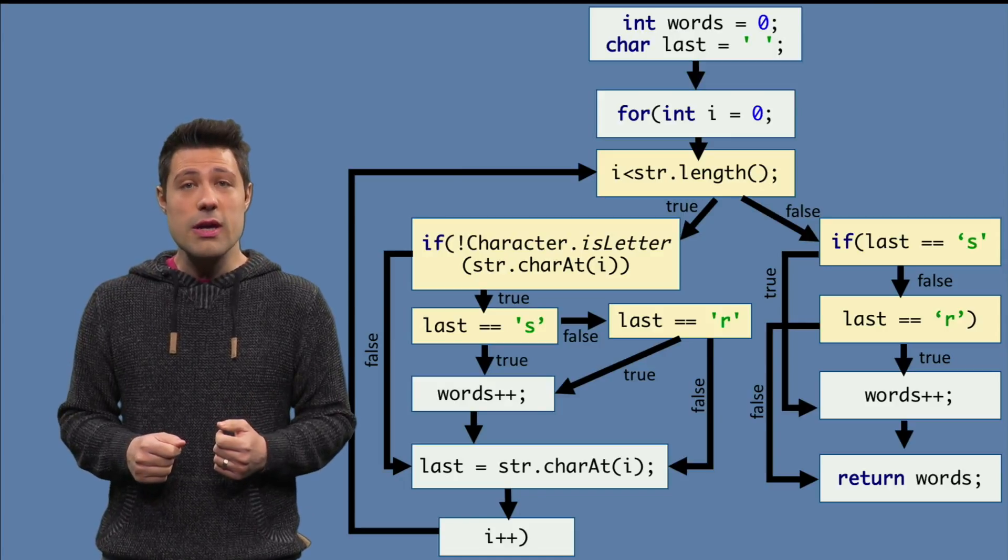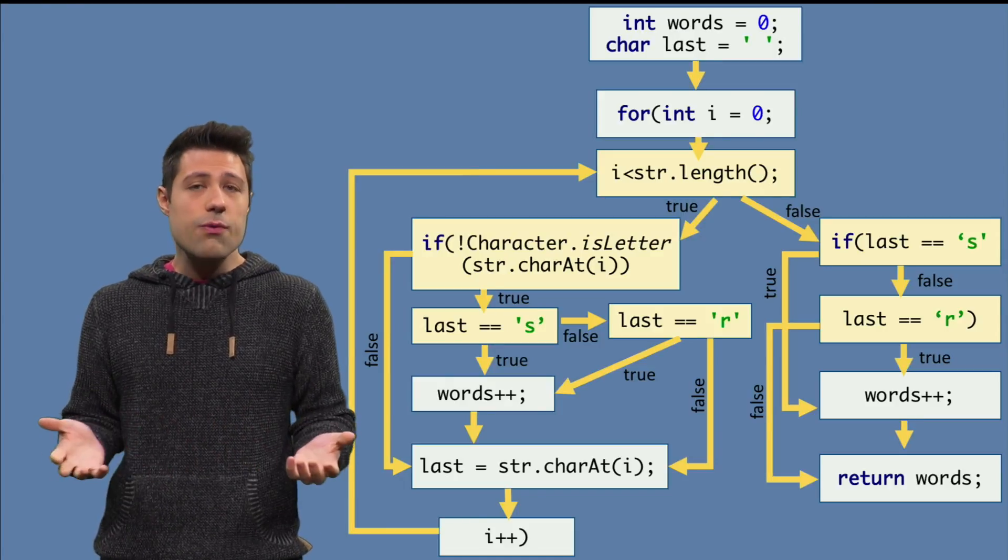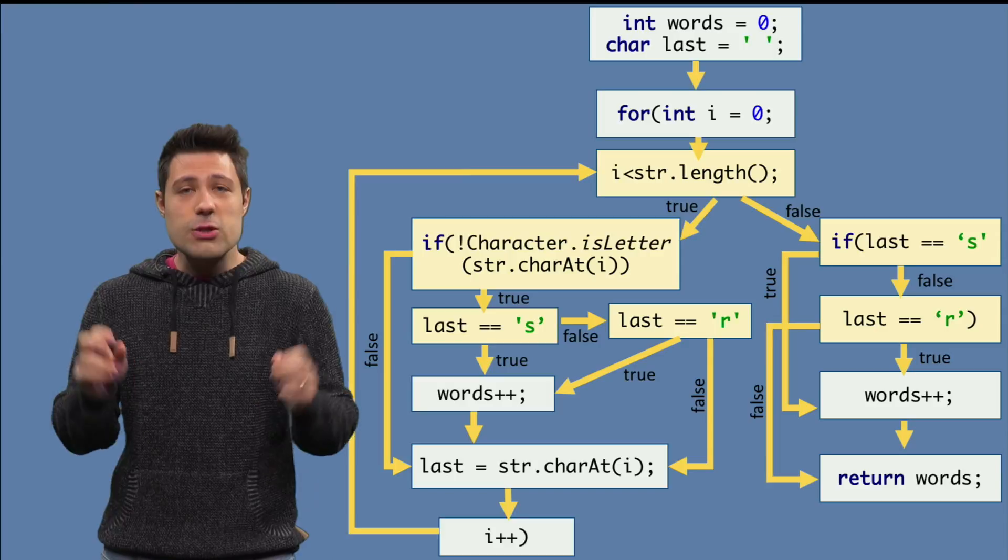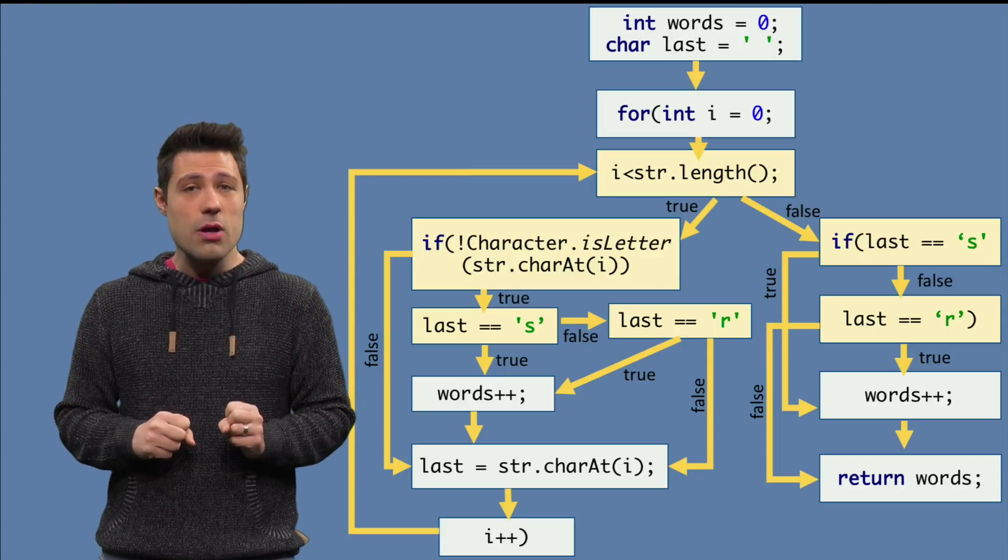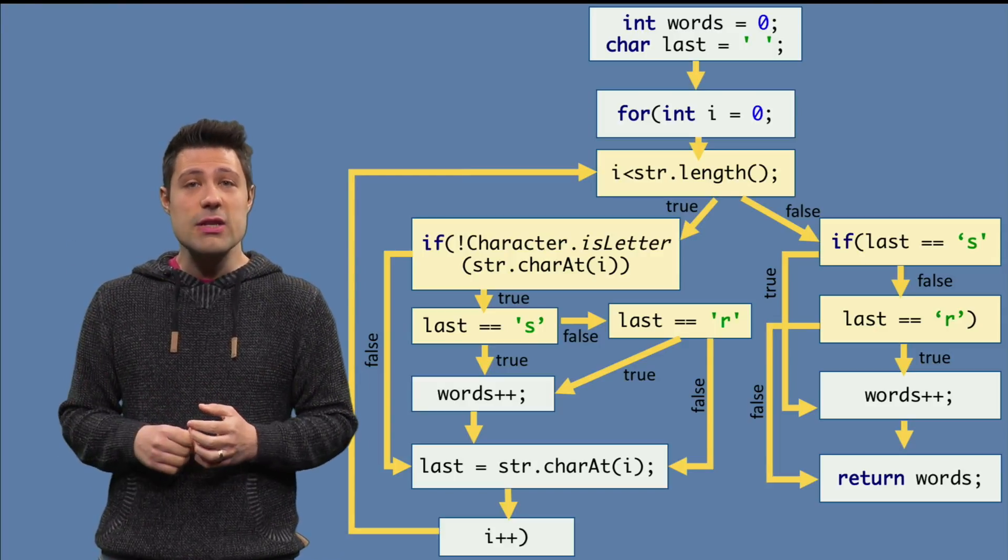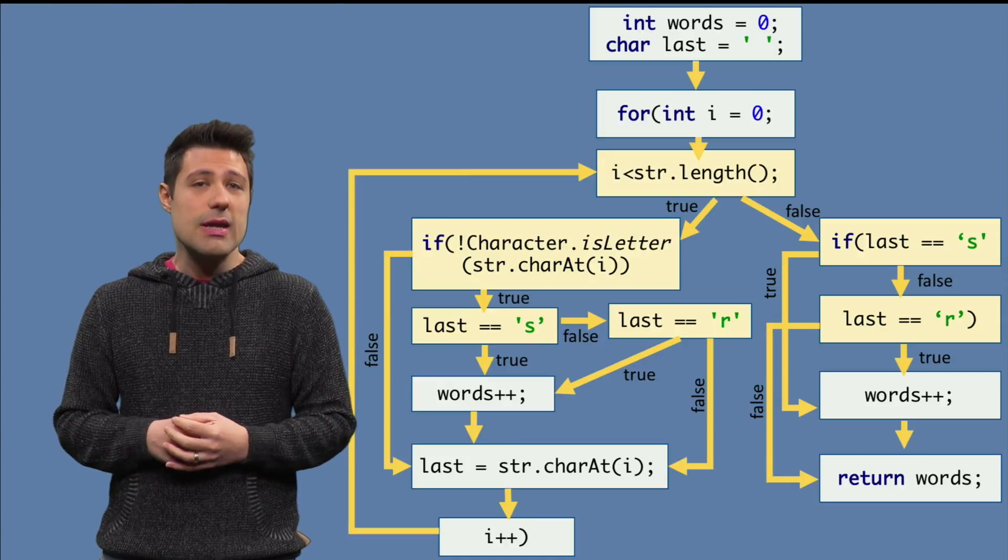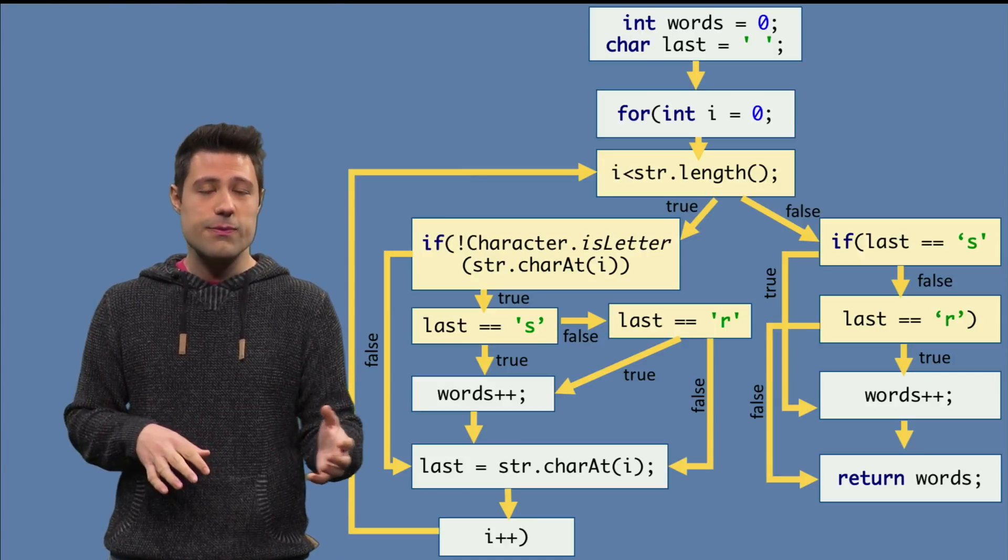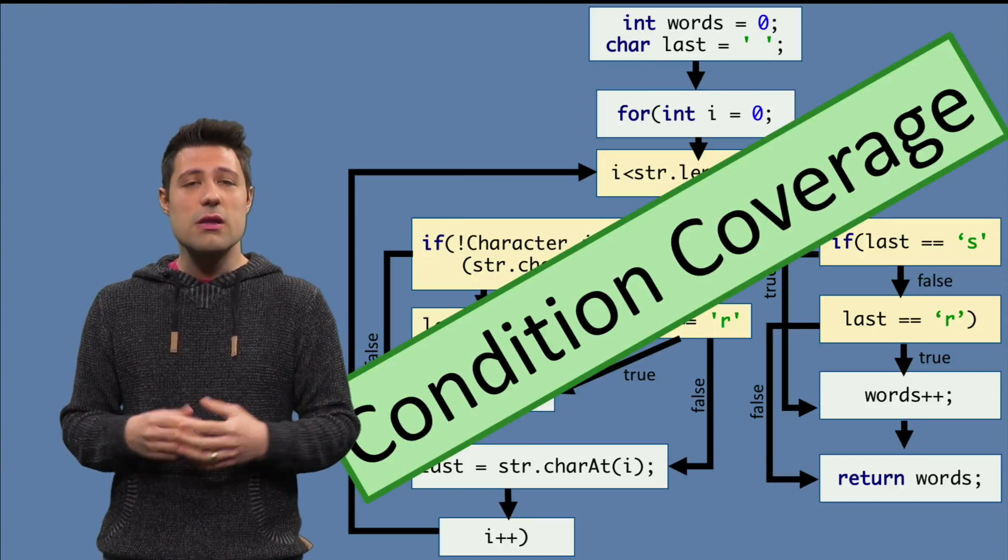Now, our goal here is the same as before, cover all the edges. Exploding the conditions into separate blocks and making sure that we have at least one test for each outcome, meaning test the true and test the false, is what we call condition coverage.